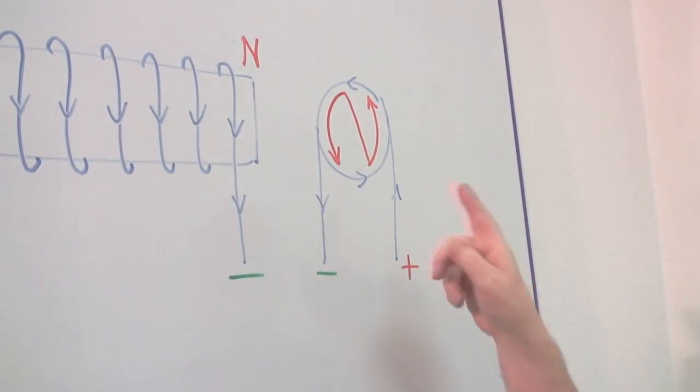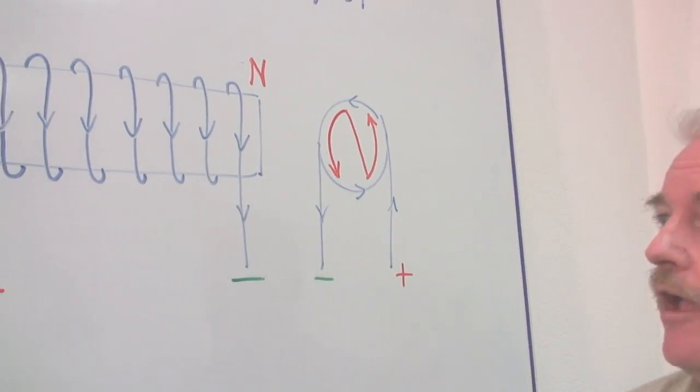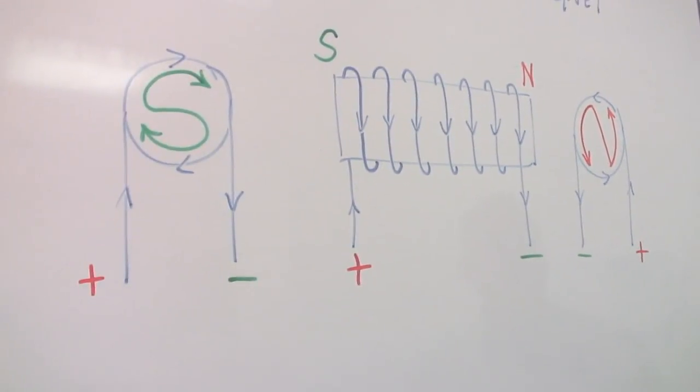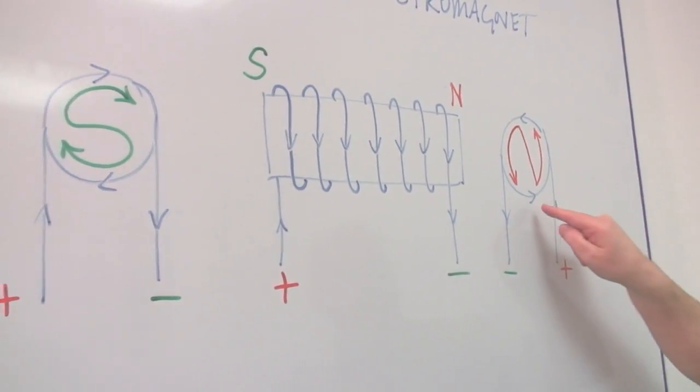So what we will do is we will try and draw a letter N and a letter S. And if we draw an N with the arrows on the extreme sides of it,